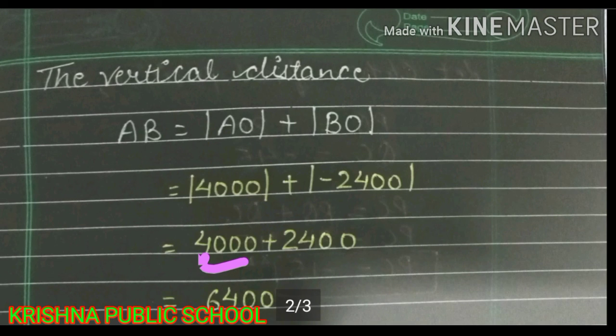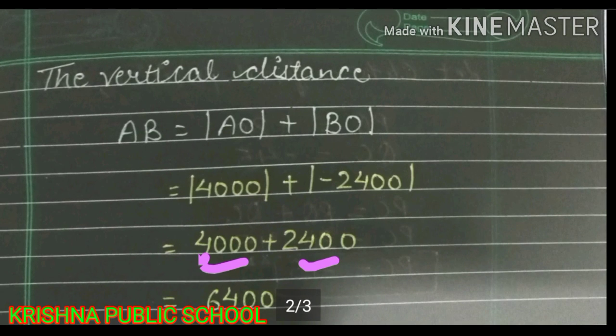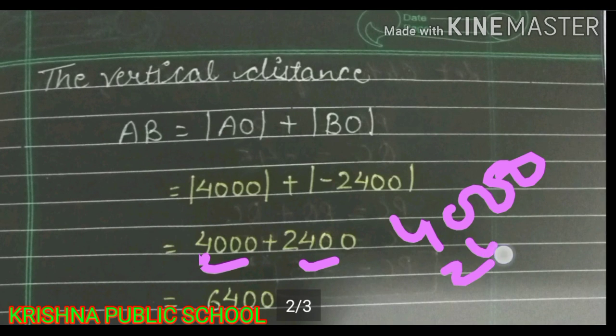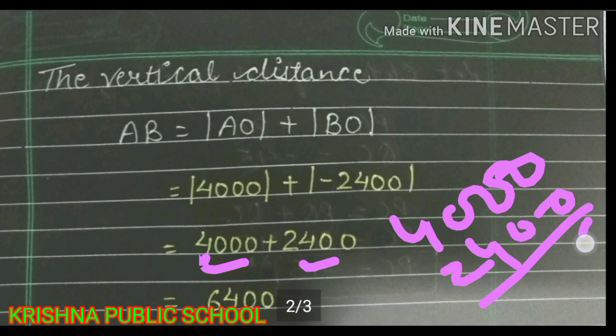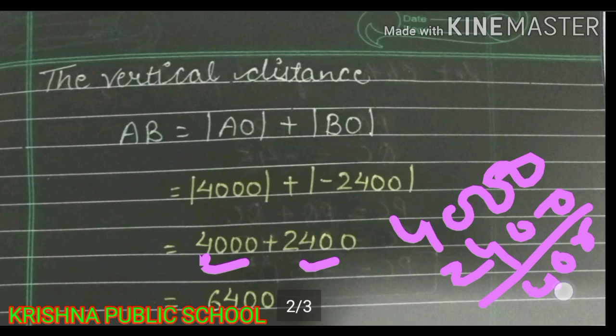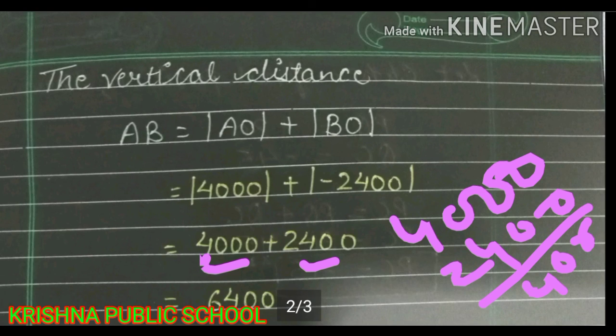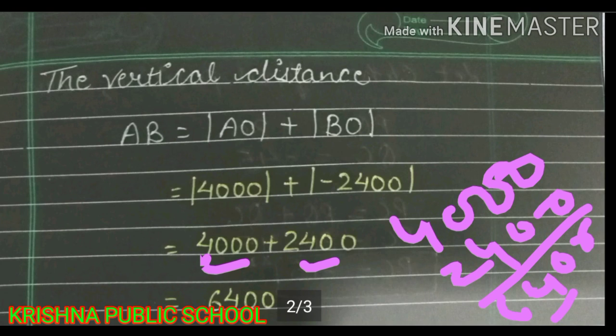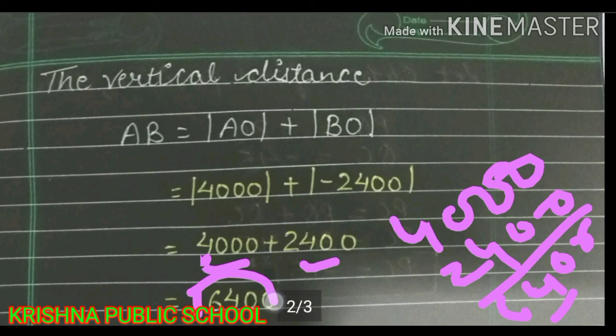So 4000 meters plus 2400 meters. 0 plus 0 is 0, 0 plus 0 is 0, then 0 plus 4 is 4, then 4 plus 2 is 6. So the answer is 6400 meters.